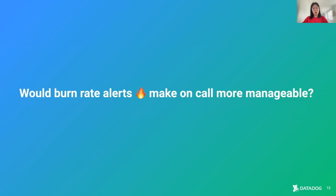The question for my experiment is whether or not burn rate alerts would actually make on-call more manageable. There is a lot of literature and resources out there that says yes, this is the case, and there are mathematical ways to figure out what your burn rates are. But my team wanted to figure out how we can put burn rates into practice and how feasible it is to replace a production-ready threshold alert with a burn rate alert.